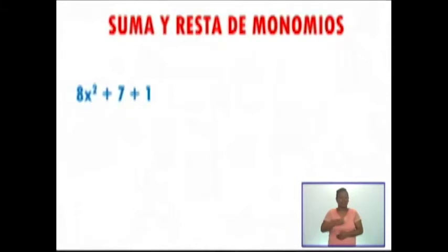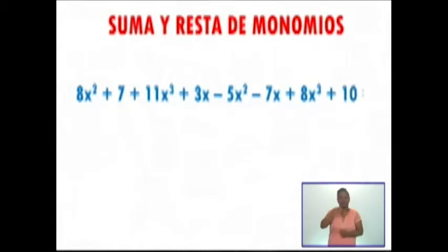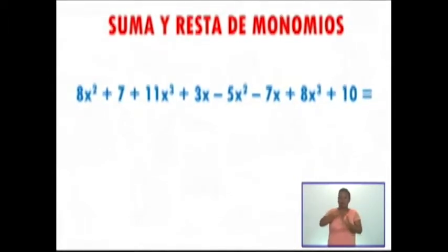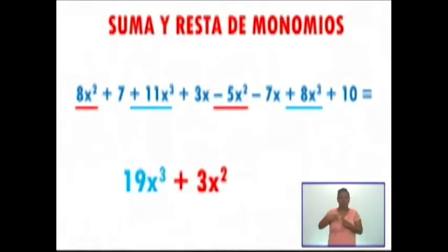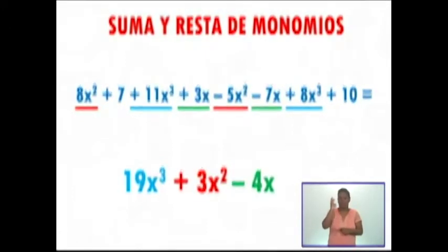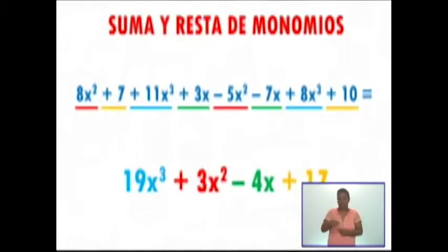Vamos a ver nuestro último ejemplo. Aquí tengo 8x cuadrada más 7 más 11x cúbica más 3x menos 5x cuadrada menos 7x más 8x cúbica más 10. Primero sumo las x con la potencia más grande: 11x cúbica más 8x cúbica da 19x cúbica. Ahora las x cuadradas: 8x cuadrada menos 5x cuadrada son 3x cuadrada. Luego las x: 3x menos 7x da menos 4x. Y los números independientes: 7 más 10 da 17. ¡Facilísimo, verdad!